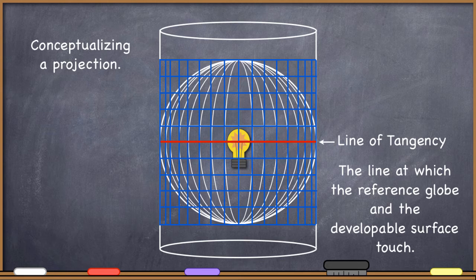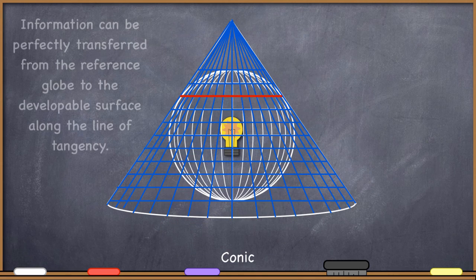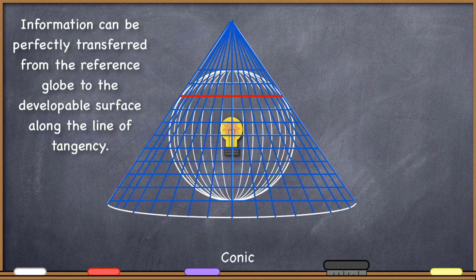Your standard parallels are the lines at which scale is constant, and actually on that line there happens to be no distortion. On that line there is no distortion between the reference globe and the developable surface because information can be transferred on these lines directly — they're touching. There's no space between the reference globe and the developable surface for it to project and distort. So at the line of tangency, at the standard parallels, if that line of tangency happens to be a line of latitude, there is no distortion and information is directly transferred.